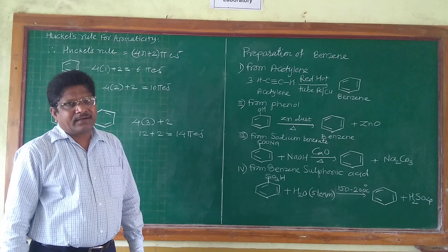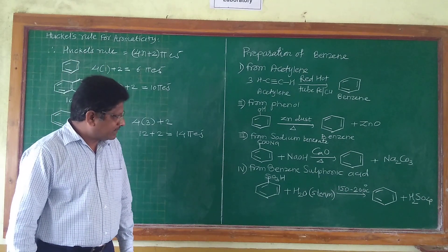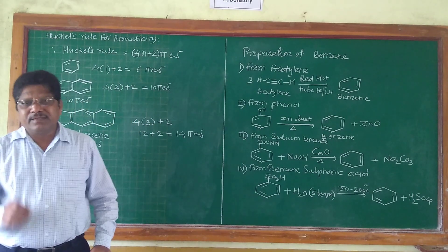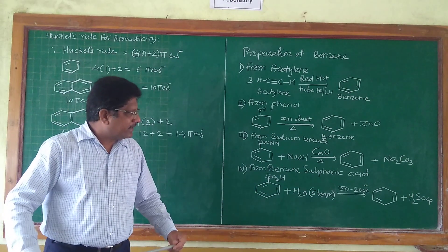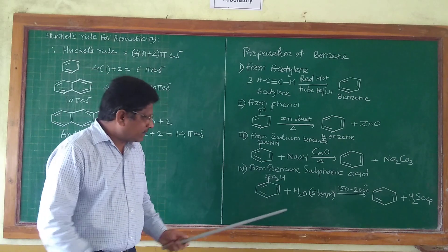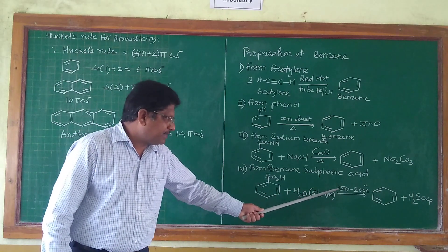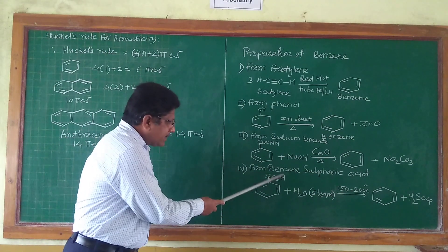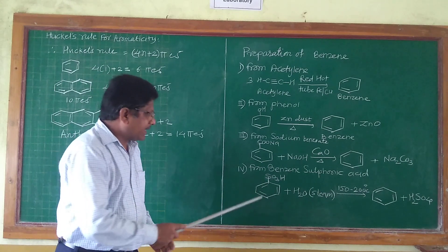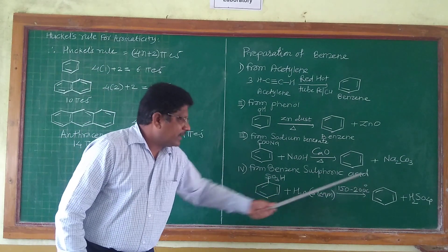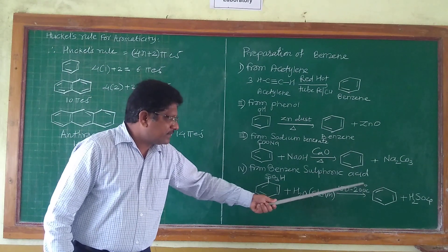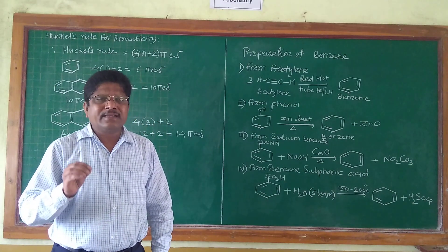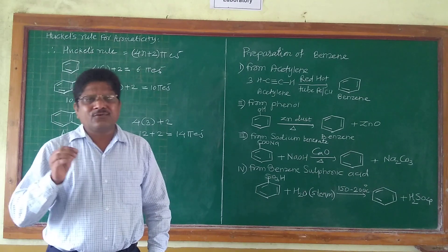The fourth important method for synthesis of benzene is from benzene sulfonic acid. In this method, benzene sulfonic acid, when reacted with steam at 150 to 200 degrees Celsius, the SO₃H group gets hydrolyzed and removed, giving benzene with H₂SO₄ as a by-product. In this way, benzene can be synthesized industrially by various methods.